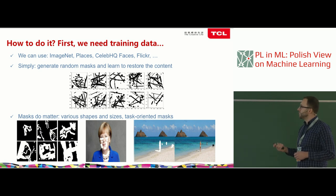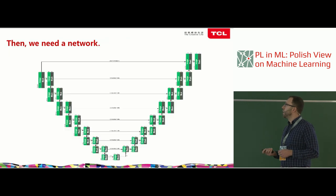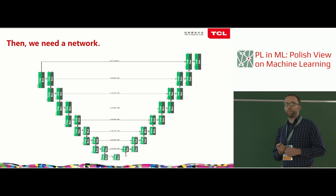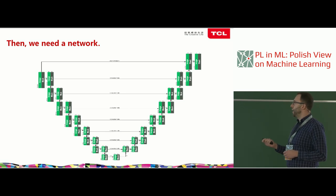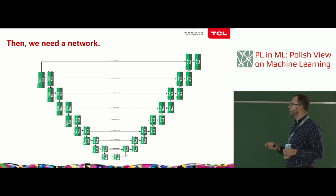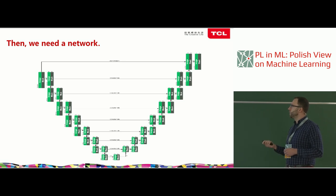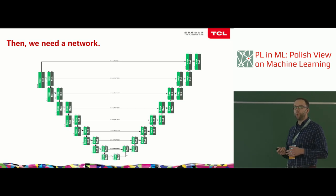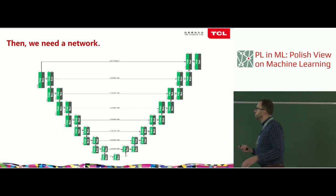It is also worth considering specialized masks, like masks placed on face landmarks or on objects. When we have masks, training data, and images, we need a model. The architecture we are building on is quite popular and based on UNet — an encoder-decoder architecture used for image segmentation. The difference here is that instead of normal convolution, we use partial convolution that takes masks into account.